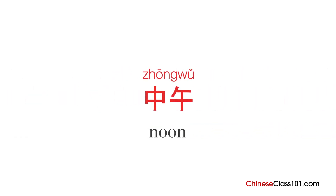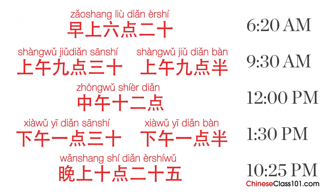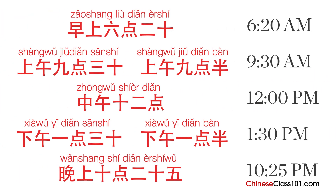If the time is between 12 PM to 1 PM, we use 中午, which means noon. Let's see how we say the following times.